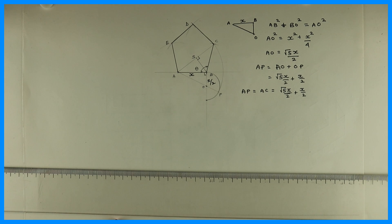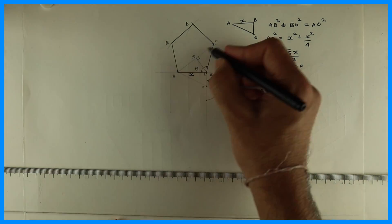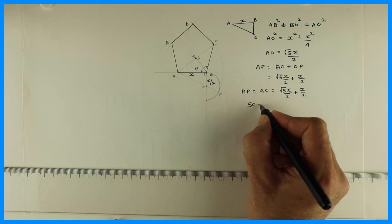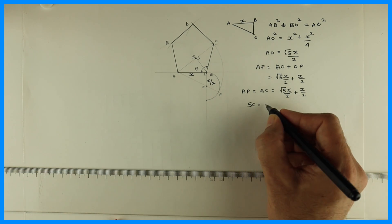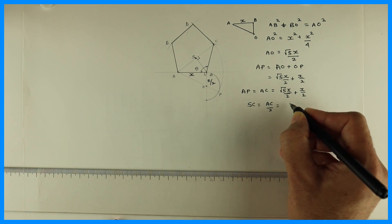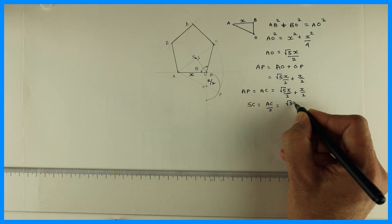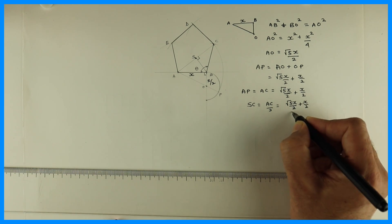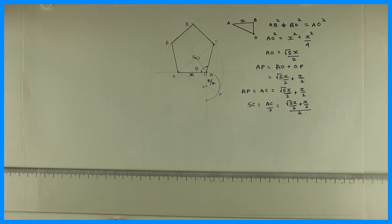Now we'll try and find out SC. So AC is half of this, AC by 2. That is 5 X upon 2, X by 2. Under root 5 X by 2 plus X by 2 upon 2.